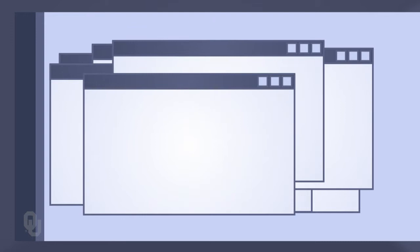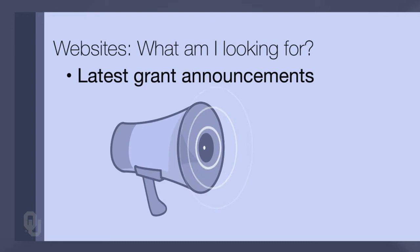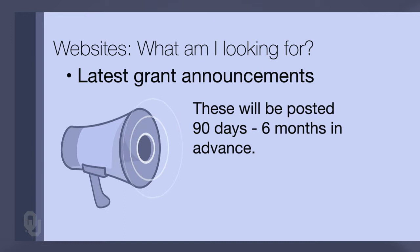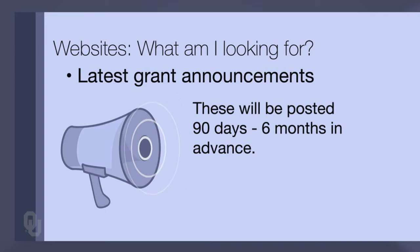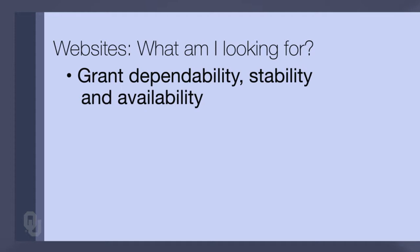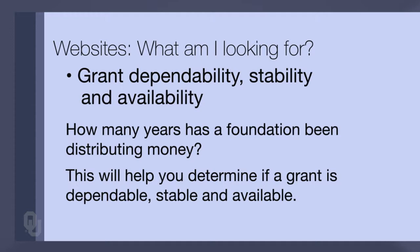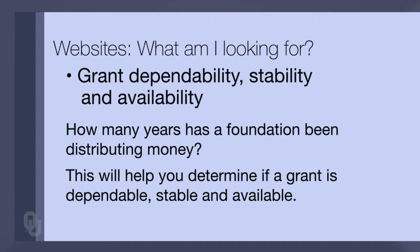When we look at all of this information, we might say there are 50 websites — what am I supposed to be looking for on this busy website page? One of the first things you look for is the latest grant announcements. Those are usually posted 90 days to six months in advance of the deadline dates. There might be narrative about upcoming grant deadlines for projects, giving you information about the money available and whether it's appropriate for your project.